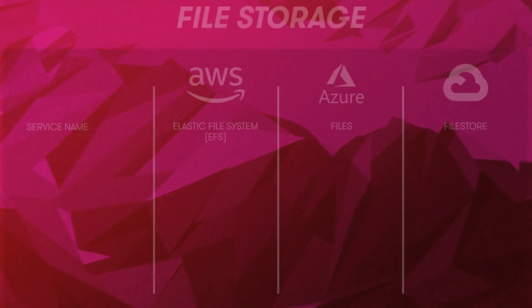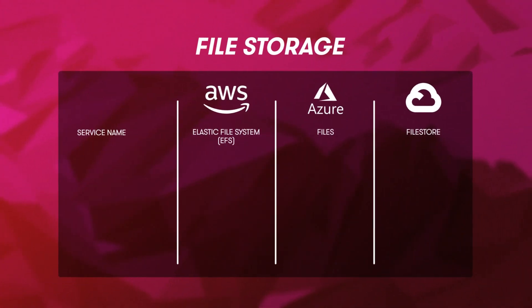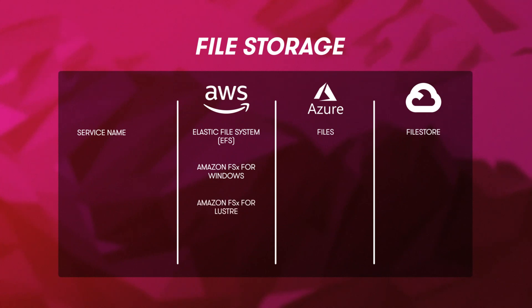These file storage services are pretty much the same, with some differences in protocol offered, maximum volume size, and performance. AWS also has two additional file storage options: Amazon FSx for Windows, optimized for use in Windows Server environments, and Amazon FSx for Lustre, optimized for high-performance computing use cases.